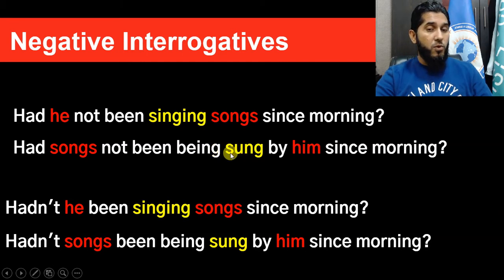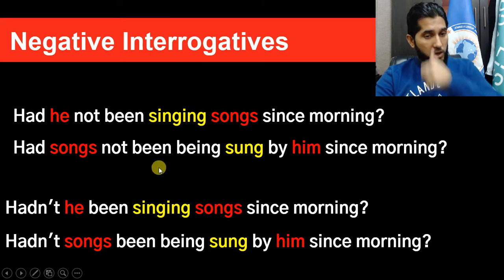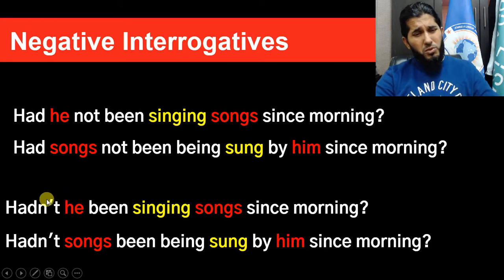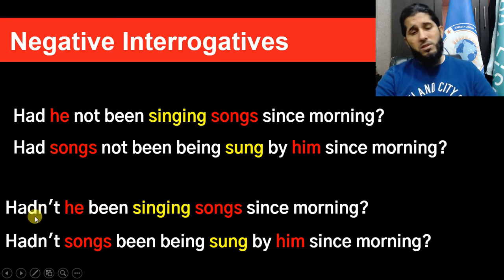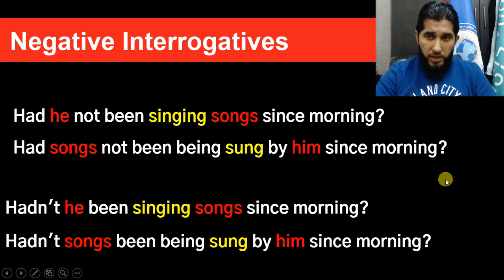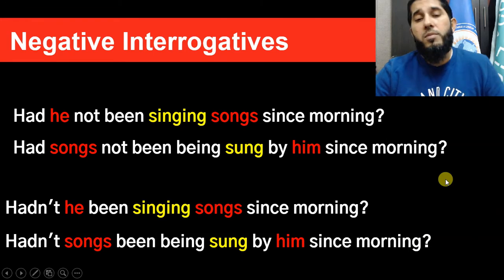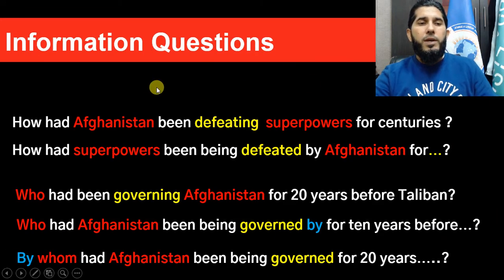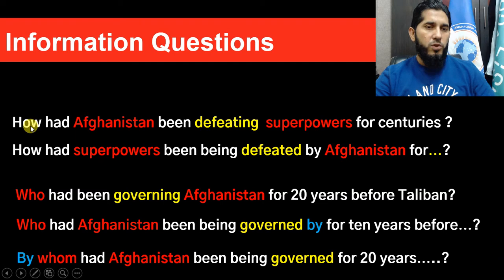One more auxiliary 'being' is added before the main verb in third form. For the short form, use 'hadn't': 'Hadn't he been singing songs since morning?' → 'Hadn't songs been being sung by him since morning?' The short form is very common in daily spoken English.